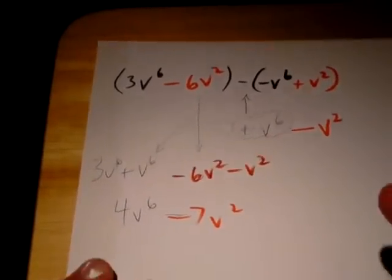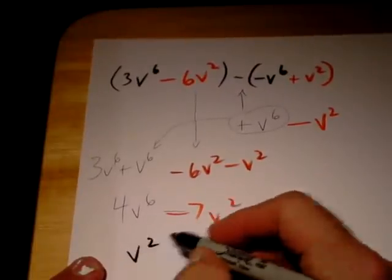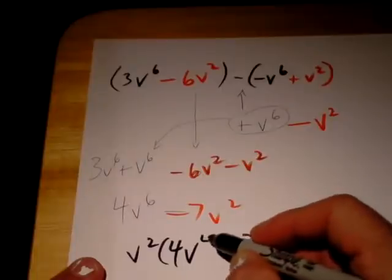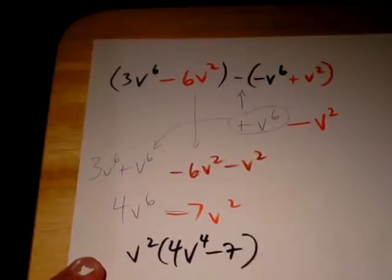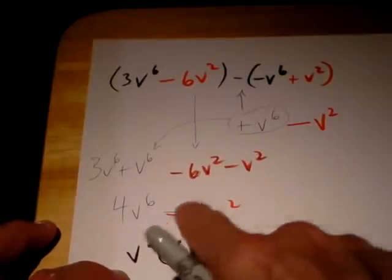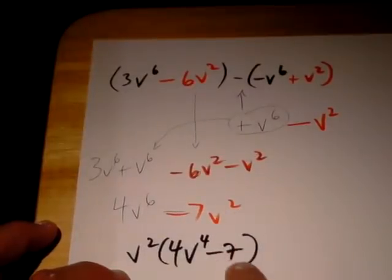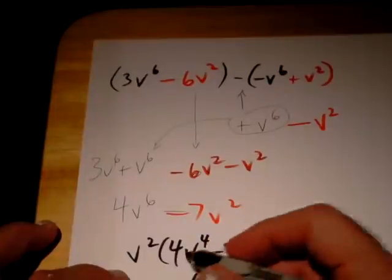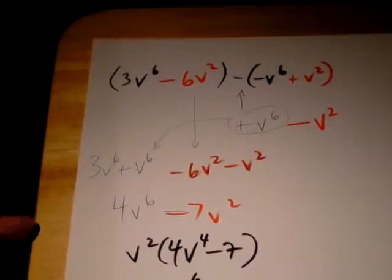Now sometimes what you'll do is you'll put the v squared on the outside. You might have something like this, you know, seven times v squared gives you negative seven. And v to the fourth power times v to the second will give you the v to the sixth. So that's a multiplication too.